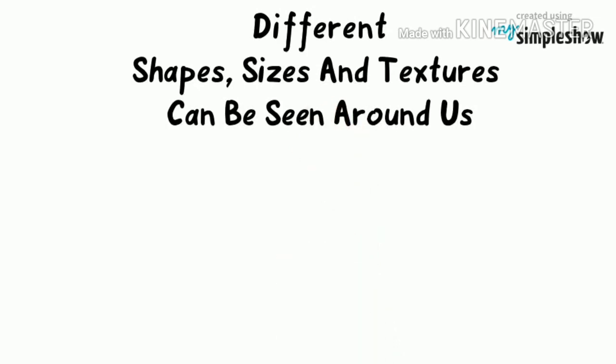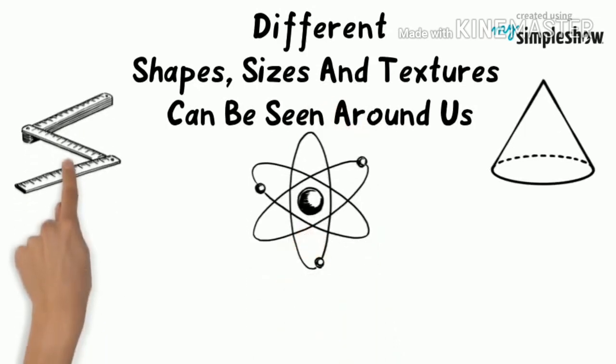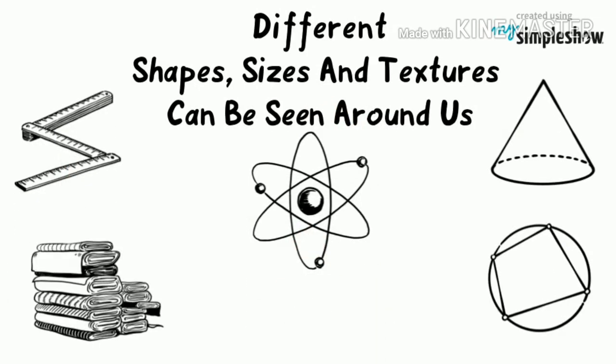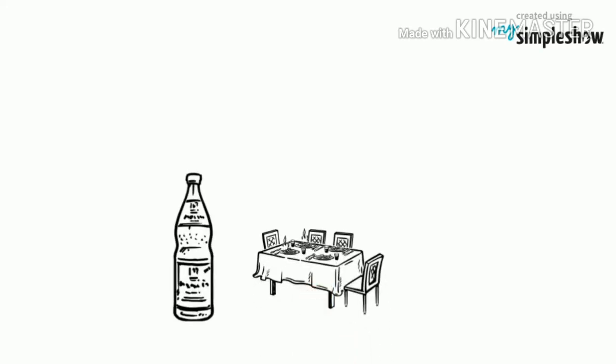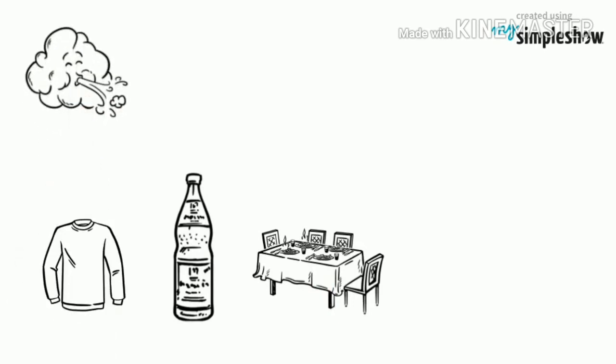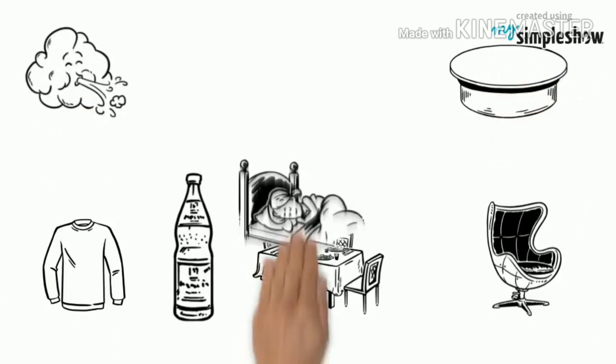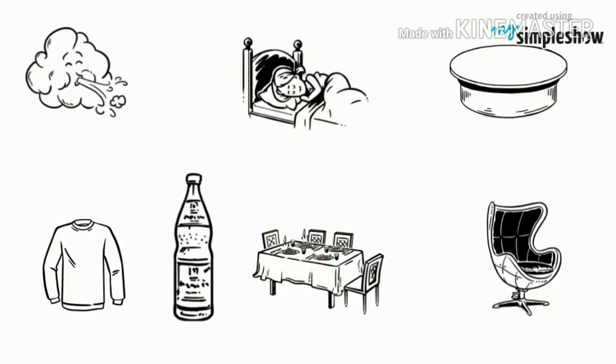If we look around us, we can see a large number of things of different shapes, sizes, and textures. Many of them are used by us in our everyday life. For example, we eat food, drink water, breathe in air, and wear clothes. We use a table and chair for studying, a bed to sleep, and so on.